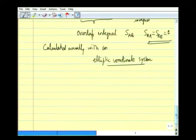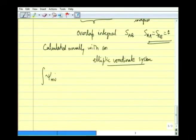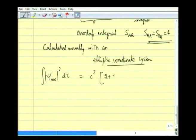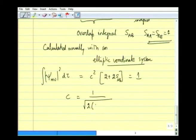Let us proceed with the analysis and come up with some answers for the hydrogen molecule ion. We need to calculate ∫|ψ_MO|² dτ = C² × (2 + 2S_AB) = 1, so C = 1/√(2(1 + S_AB)). This is because we chose the plus combination ψ_MO⁺.